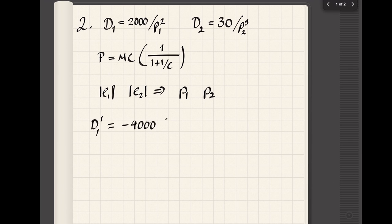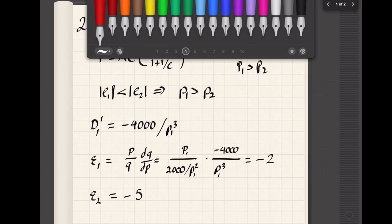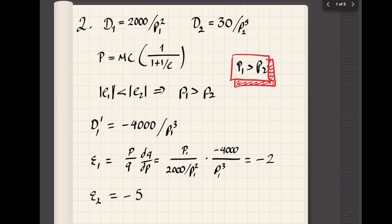We need to compare the elasticities, and in this case computing the elasticities is very simple. The elasticity in the first market is going to be equal to minus two, and the elasticity in the second market is going to be equal to minus five, which means that the second market is more elastic and therefore receives a lower price.